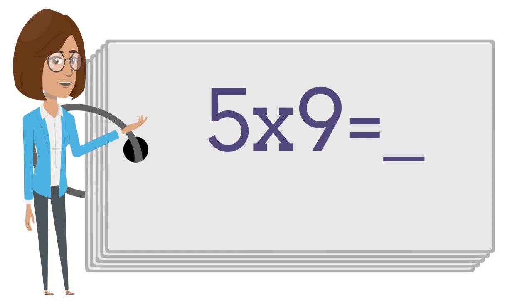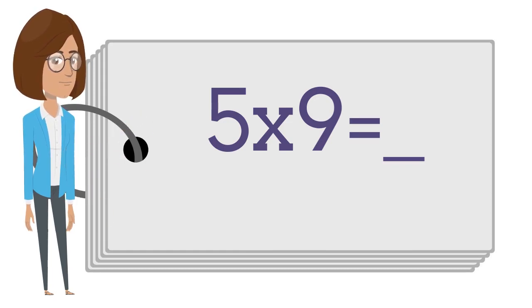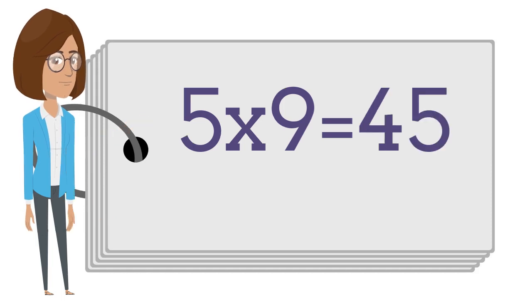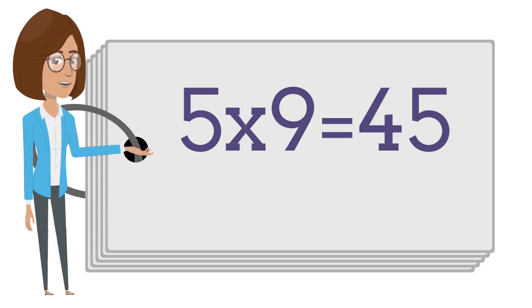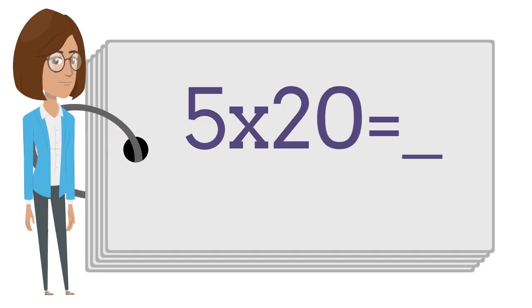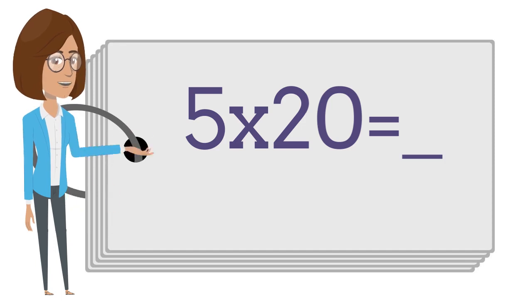Five times nine is? Say the answer out loud. Five times nine is forty-five.